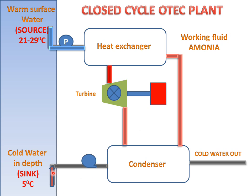Cold water will come from the ocean depth and go to the condenser, exchanging heat and converting ammonia into a liquid state. The cold water will then exit after working. The liquid ammonia will go back to the heat exchanger, and the cycle will be repeated again and again. This is called the closed cycle OTEC plant.